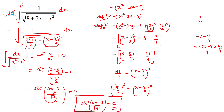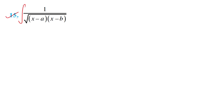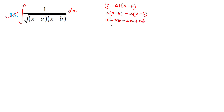Next let's go to question 15: integrate 1/√[(x-a)(x-b)] dx. We first simplify the denominator: (x-a)(x-b) = x² - x(a+b) + ab. In step 1, the coefficient of x² is 1, so no change needed. In step 2, the coefficient of x is (a+b). Half of (a+b) is (a+b)/2. We add and subtract [(a+b)/2]².